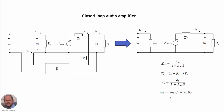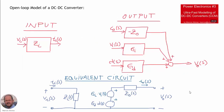The idea of this video is to investigate what happens with our DC-DC converter and its different characteristics when we operate it in closed loop. As a quick review from previous videos, in Power Electronics number three we have seen how to model our DC-DC converter using the input impedance, the output impedance, the audio susceptibility transfer function, and the control-to-output transfer function — both using block diagrams and the equivalent circuit, including the voltage sources corresponding to the audio susceptibility effect and the control-to-output transfer function effect.